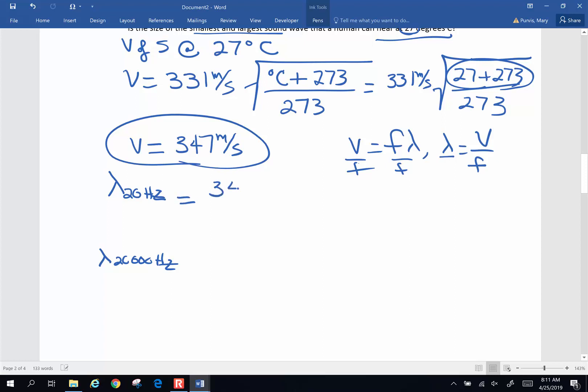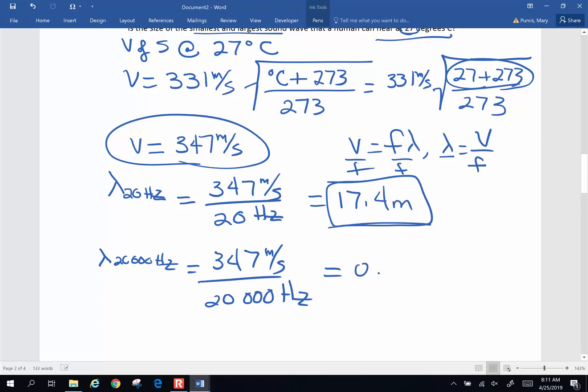And when I pull both of those into my calculator, for the long wavelength, I get 17.4 meters. That is not quite two downs in football. That's pretty long. And for the short one, 0.0174 meters. That is going to be my short wavelength.